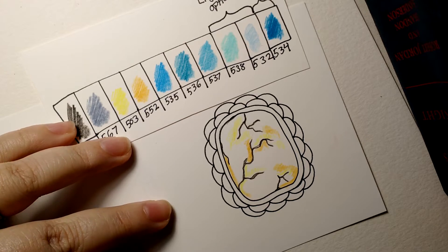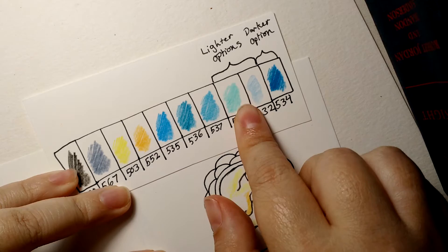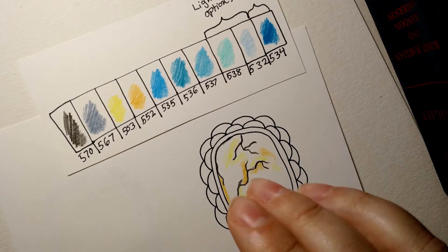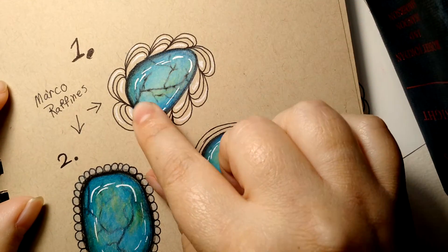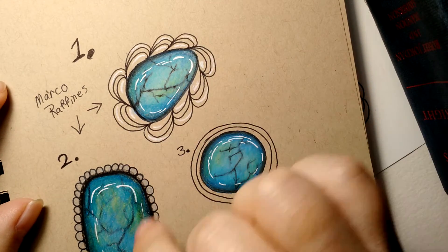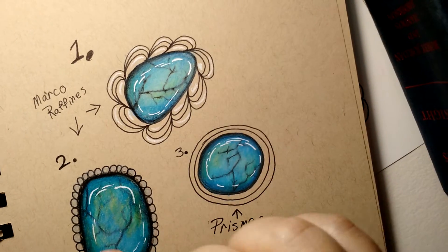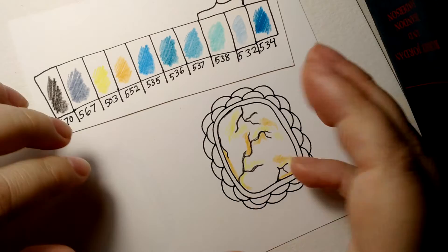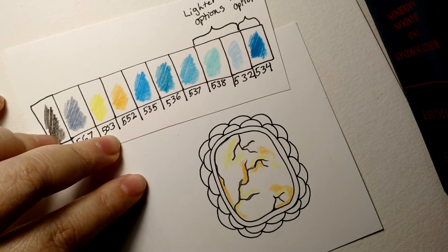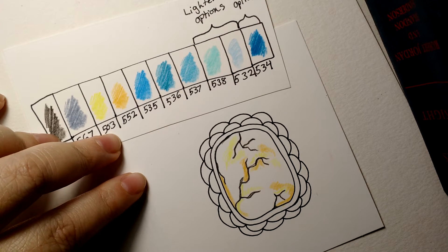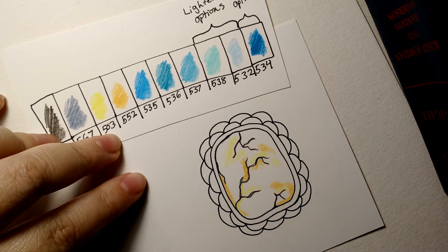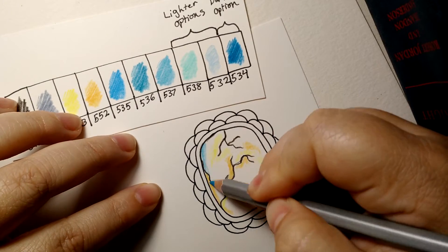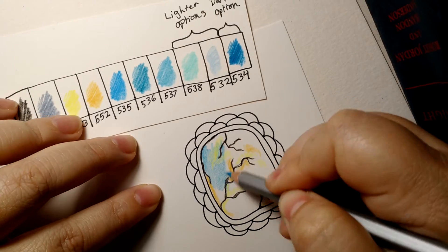Now we're going to go with one of the lighter colors, which is 537 that I have that I'm using. I'm going to go over the entire stone. It doesn't have to be perfect, it just has to be a layer. It doesn't even have to be blended or anything like that. I'm actually not even using a blender during this tutorial at all. I think it gives it a more natural feel.